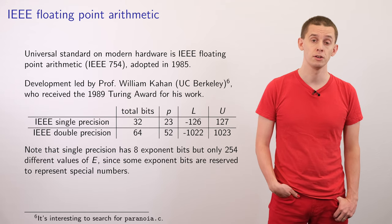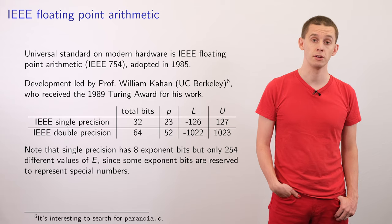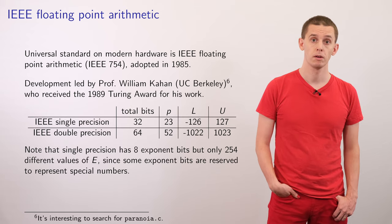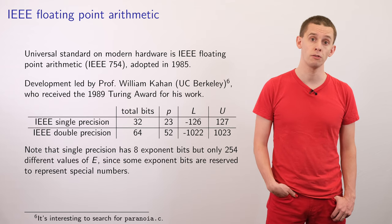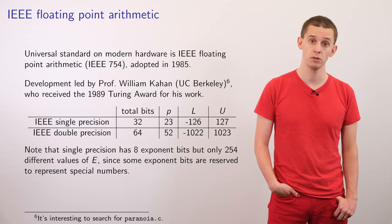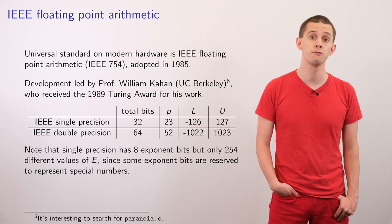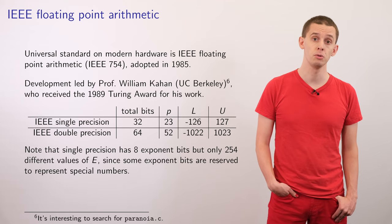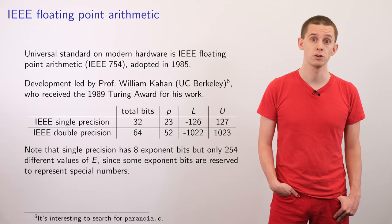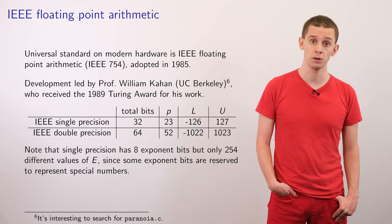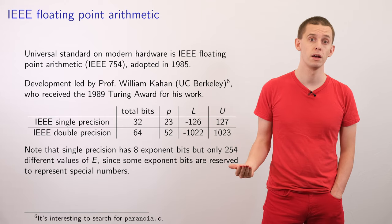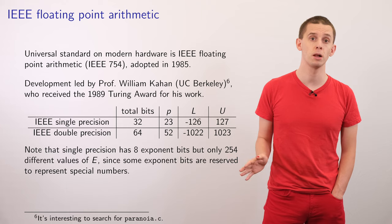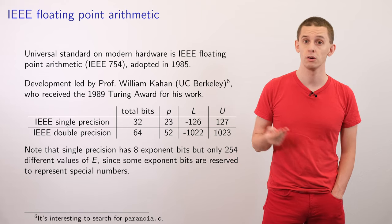The IEEE double precision standard uses 64 total bits, or 8 bytes in total, and uses a larger range for the exponent. With the single precision standard, 8 bits are used to represent the exponent, giving 2 to the 8, or 256 possible exponent numbers. The actual range from minus 126 to 127 only covers 254 of those numbers, and we use the additional two numbers to represent special numbers in our number system, including zero, which does not fit within scientific notation. These standards are used in billions of computers worldwide in many mission-critical operations such as the airline, financial, and healthcare industries.